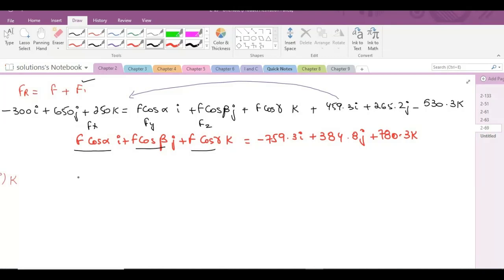So if I want to find the magnitude of force F, the magnitude could be found by using the Pythagorean theorem. So F is equal to the square root of Fx squared plus Fy squared plus Fz squared.